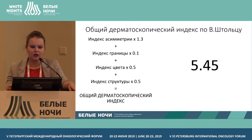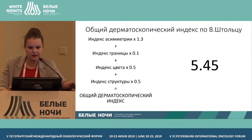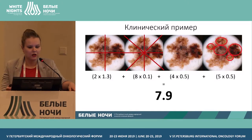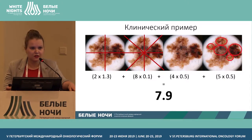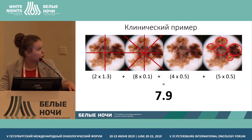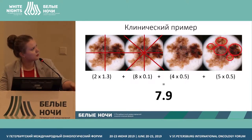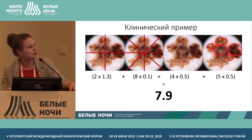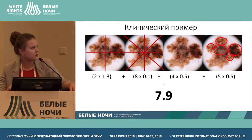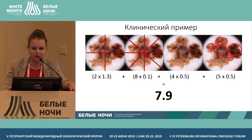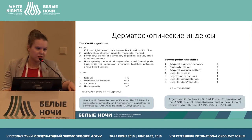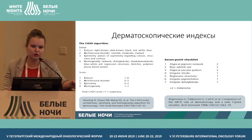To make dermoscopic findings more objective, indexes have been developed — for example, the Stolz index. You can see a clinical example of a pigmented lesion here, with two and eight axes. The number of colors and typical dermoscopic structures are calculated. The dermoscopic index evaluated here is 7.9, indicating it could be melanoma. The dermoscopic index is not a single approach — there is also the CASH algorithm and the seven-point checklist.